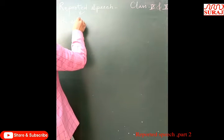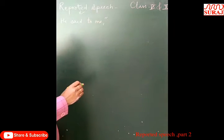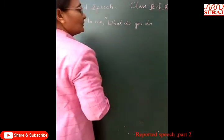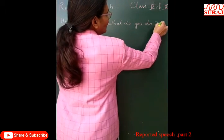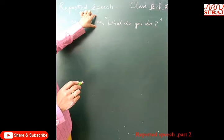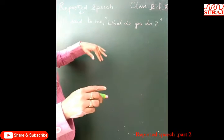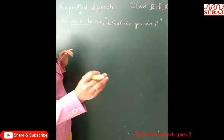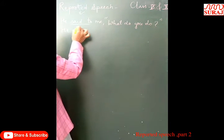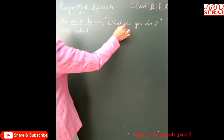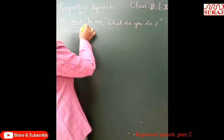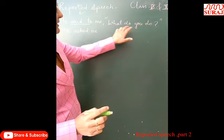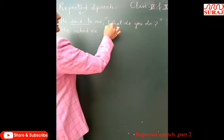Let's change this example. Direct speech: 'He said to me, "What do you do?"' This is direct speech. Now converting to indirect: 'said to' becomes 'asked' because it is an interrogative sentence — He asked me. Since the interrogative sentence starts with the WH word 'what,' no conjunction is needed; the WH word 'what' is used directly in place of the comma.